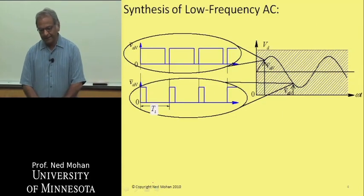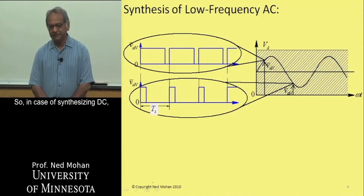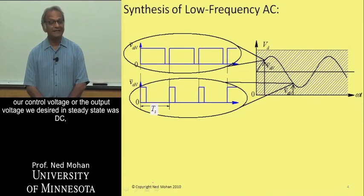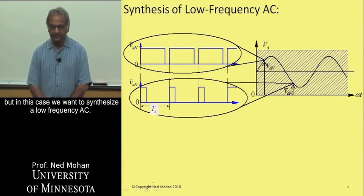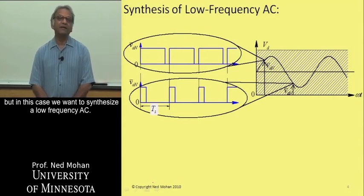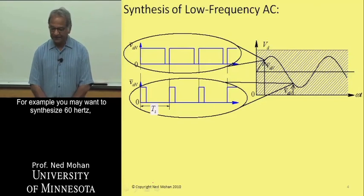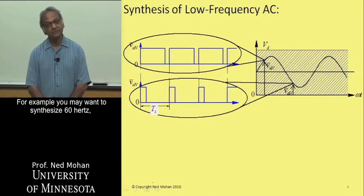So in case of synthesizing DC, our control voltage or the output voltage we desired in steady state was DC. But in this case, we want to synthesize a low-frequency AC. For example, we may want to synthesize 60 hertz.